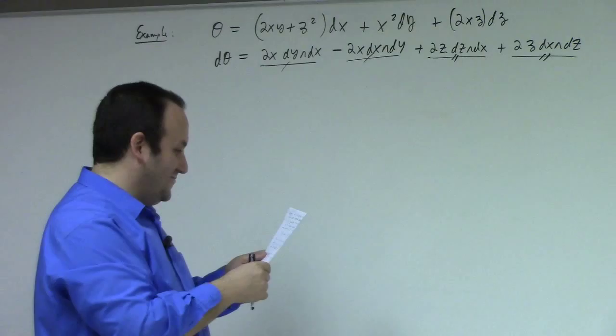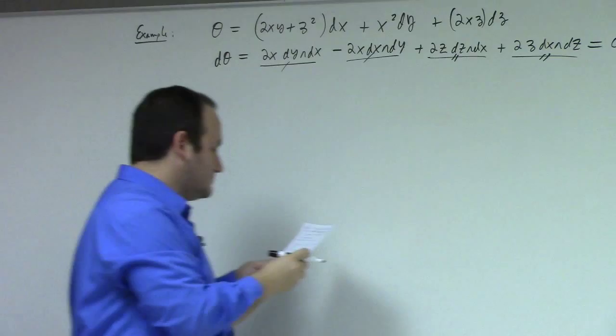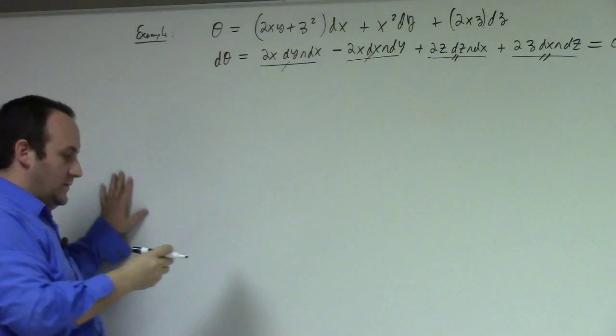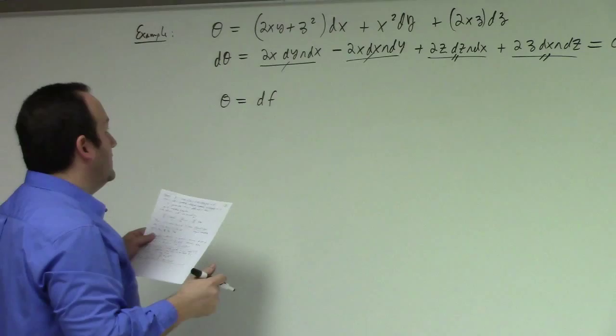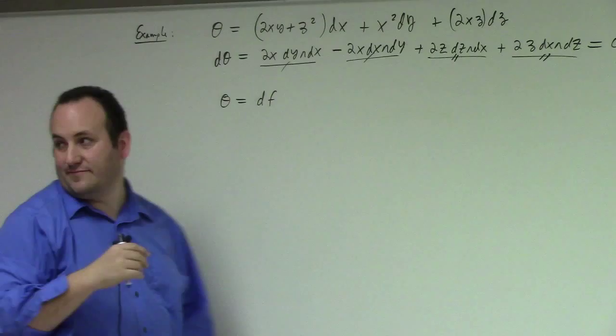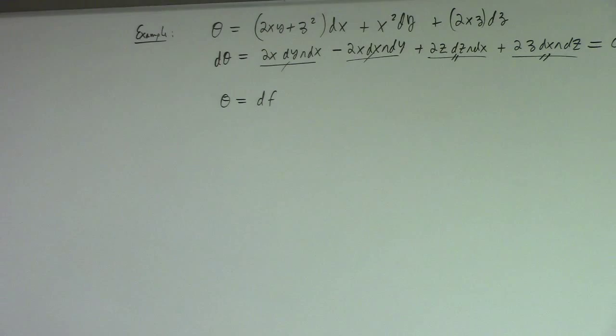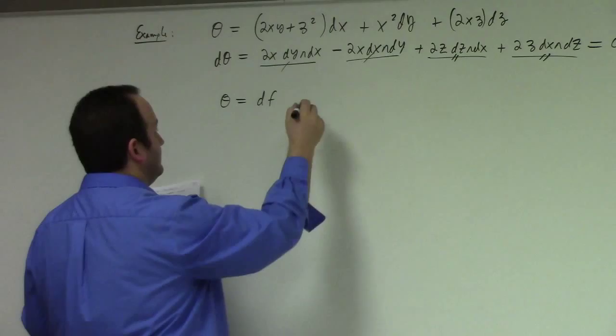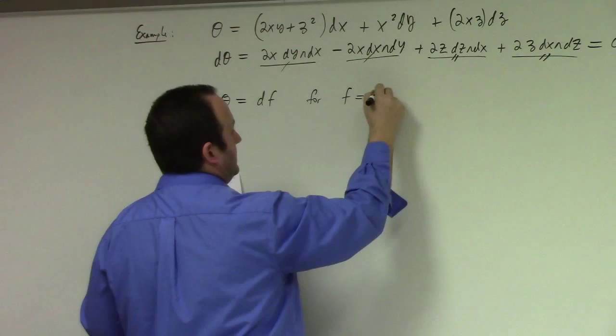This is equal to zero. So you can prove that θ = df — θ is exact. The fact that dθ = 0 means θ is exact, and indeed θ = df where f = x²y + xz².